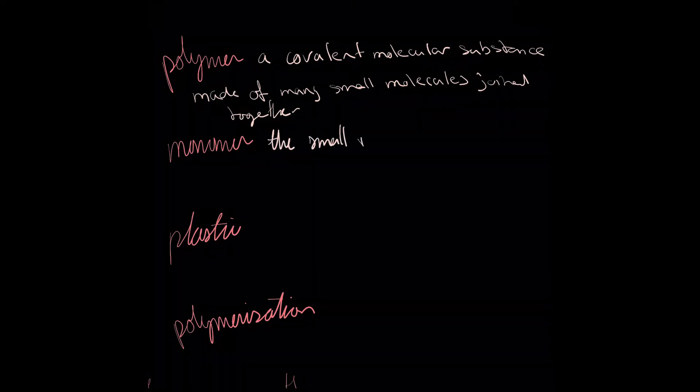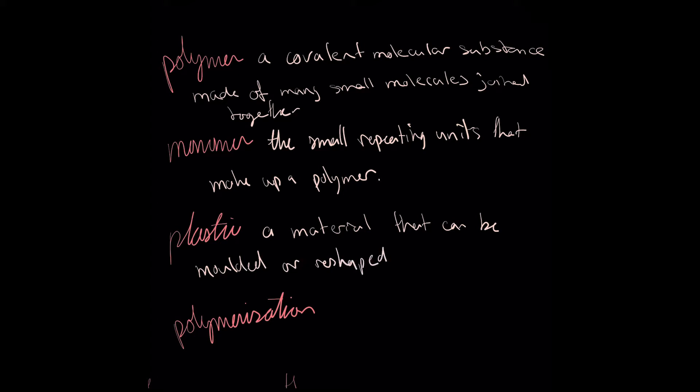In everyday life we usually call these materials plastics. In chemistry, however, plastic describes a property of a material, that it can be reshaped. The reason that we use this word to refer to polymers is that many polymers are plastic and can be molded. Not all polymers are plastic though, even though we often use the words interchangeably. Polymerization is the process of taking a bunch of monomers and performing a chemical chain reaction to create a polymer.